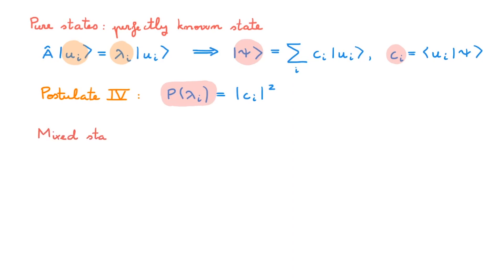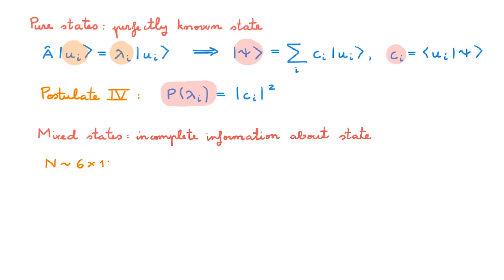Now let's remember what mixed states are. A mixed state is used to describe a system for which we only have incomplete information about the state. This is a feature that also exists in the classical world and is unrelated to the probabilistic nature of pure states in quantum mechanics. For example, when we have a macroscopic system with a number of particles of the order of Avogadro's number, it is impossible to fully characterize the system, be it classically or quantum mechanically. What we do in this case is to use probability in the context of statistical mechanics. For example, a system at thermodynamic equilibrium at temperature T has a probability of being in a state of energy E proportional to the exponential of minus E over k_B T, where k_B is Boltzmann's constant.